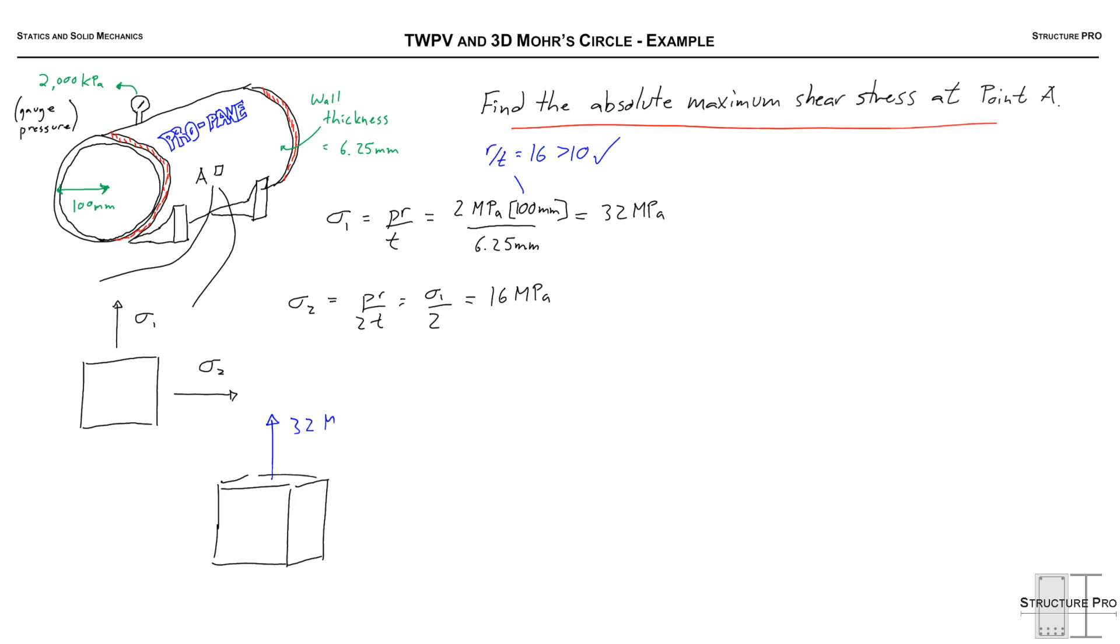It goes from P to 0 through the wall thickness, but we also know from our derivation previously that the error will be small if we assume that's 0 on both sides. Partially because this R over T we have is 16, so sigma 1 is 16 times P and sigma 2 would be 8 times P.